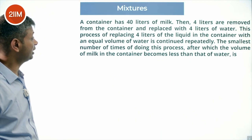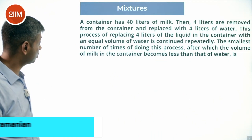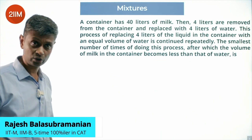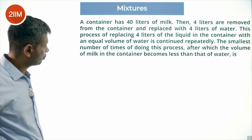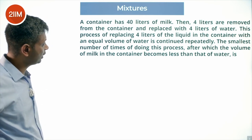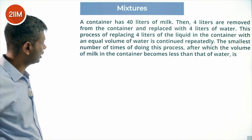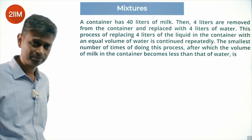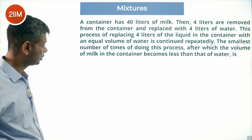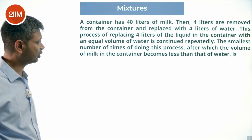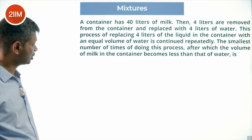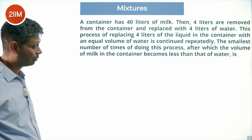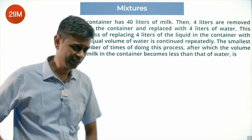A container has 40 liters of milk. Then 4 liters are removed from the container and replaced with 4 liters of water. The process of replacing 4 liters of the liquid with an equal volume of water is continued repeatedly. Find the smallest number of times of doing this process after which the volume of milk in the container becomes less than that of water.